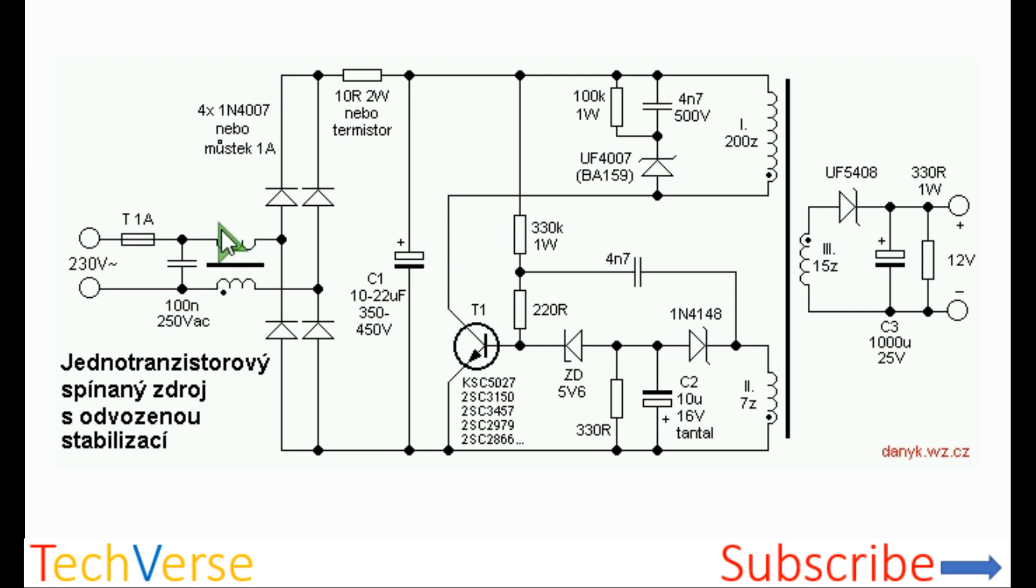Then there's a bridge rectifier and this other resistor for limiting the inrush current when this large capacitor is charging. Here you'll have your high voltage DC.